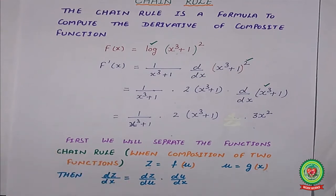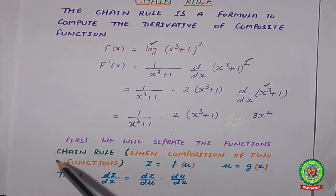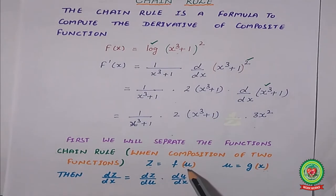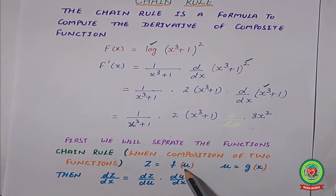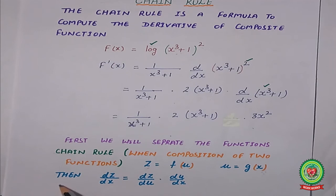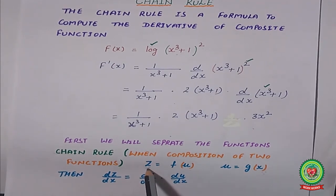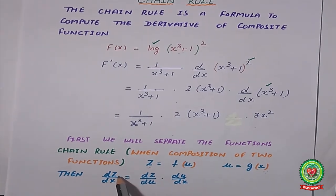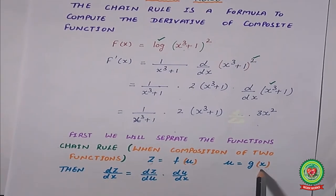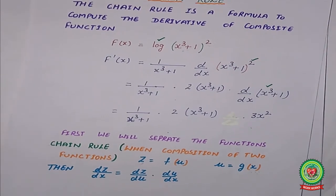Now, what is the working rule of the chain rule? First, we will separate the functions and give them new variable names. According to chain rule, when a composition of two functions is there, we denote z equal to the first function. Then whatever the second function is, we call it g(u) equal to g(x). Since z is expressed in terms of u and u in terms of x, we find dz/du and du/dx separately. Then we multiply them to get the answer dz/dx.